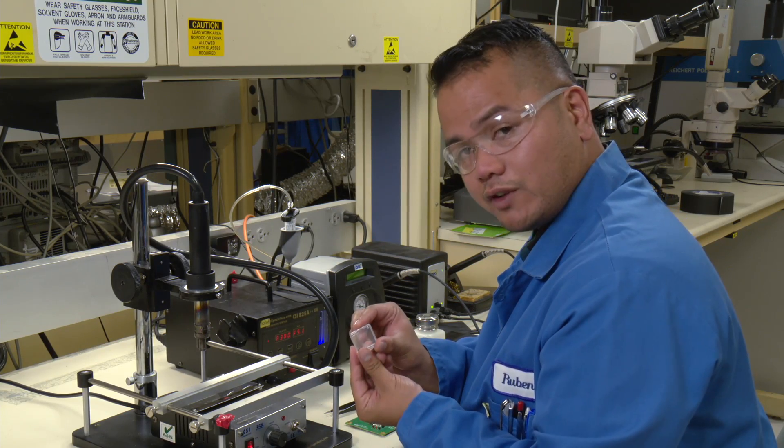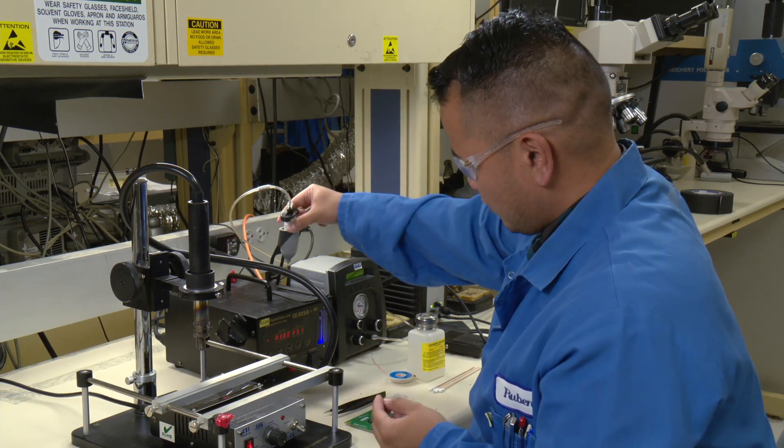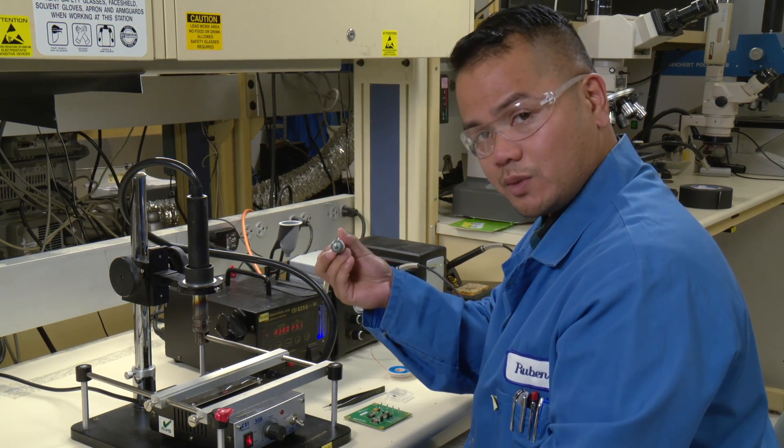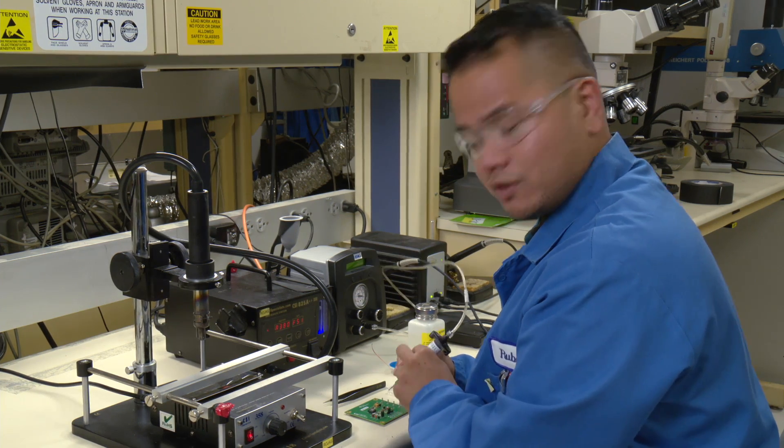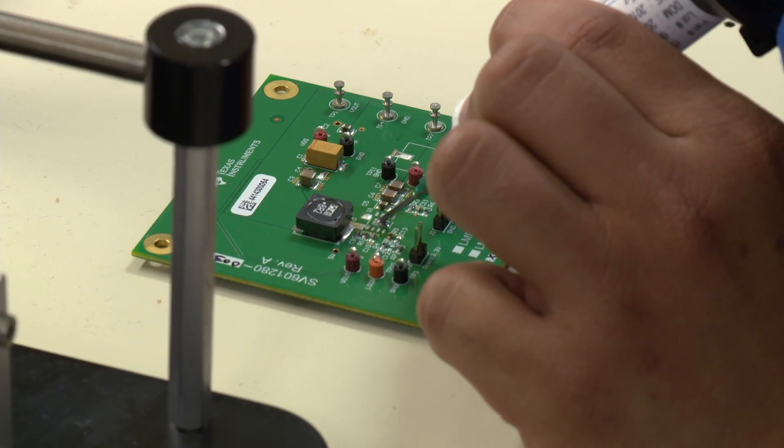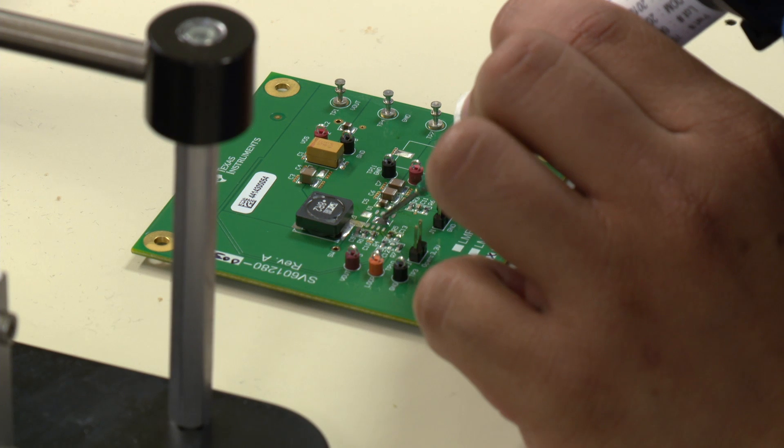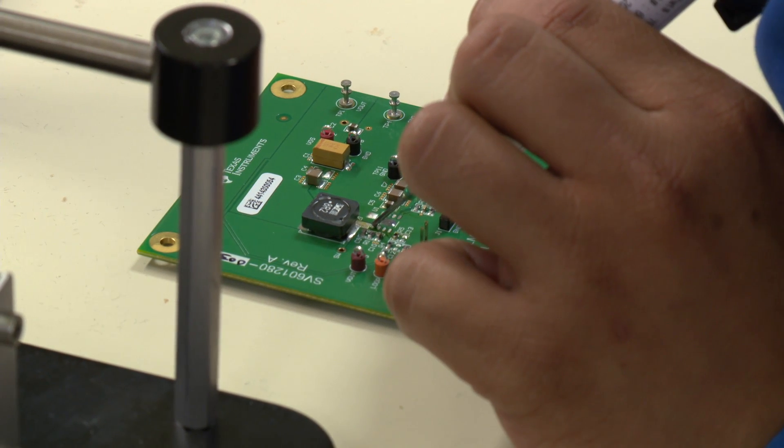So here I have the new part. So before I put that on, I'm going to take the liquid solder and put it on all the exposed metal on the part. First, I'll put it on the DAP, then on the leads.